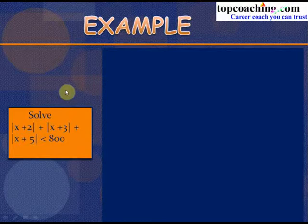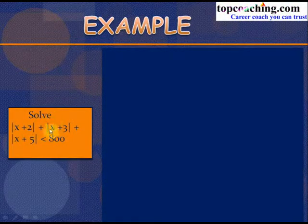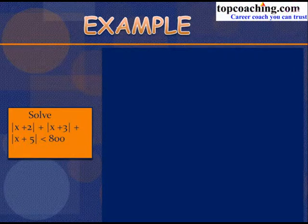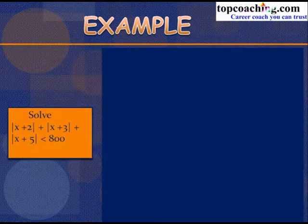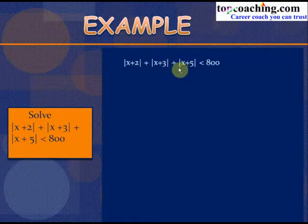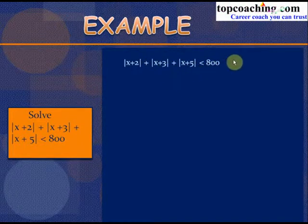Let's solve one more example: |x + 2| + |x + 3| + |x + 5| < 800. The key idea is to solve for the extreme conditions. The quantity x + 2 equals zero at x = −2, and x + 5 equals zero at x = −5, so these are the extreme points.